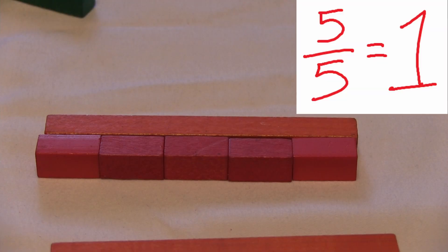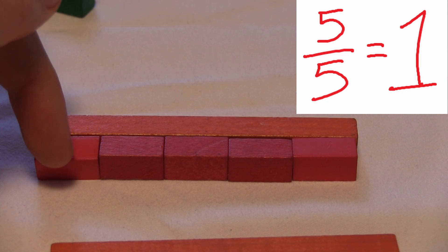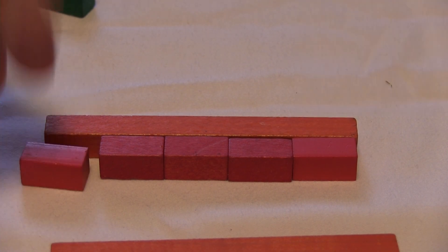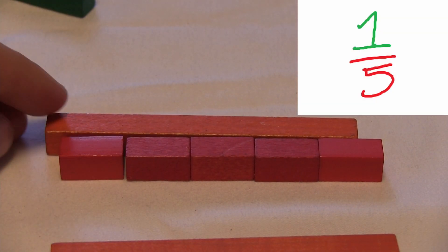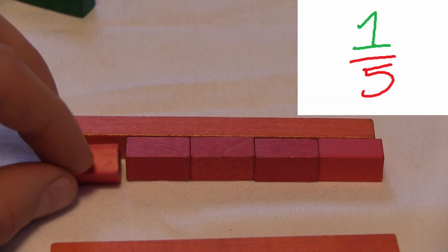So there we have it. It takes five of these small bars to equal one whole. So this fraction is one piece of five that equal one whole. This is one of five.